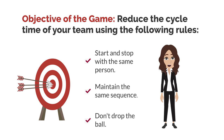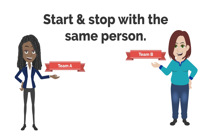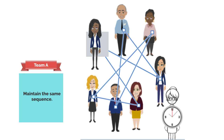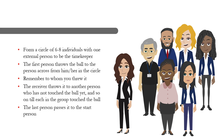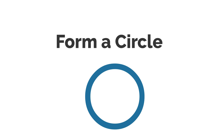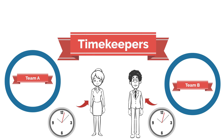The objective of the game is to reduce the cycle time of your team using the rules below: start and stop with the same person, maintain the same sequence, and don't drop the ball. To begin, you will need to form a circle of six to eight individuals with one external person to be the timekeeper.